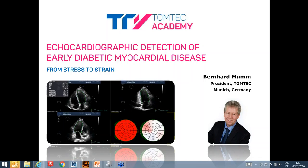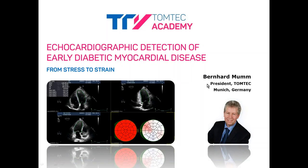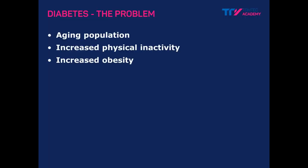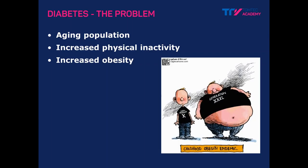Looking at the problem of diabetes — we have a worldwide aging population, which is positive, but it comes with problems. On top of that, we have an increase of physical inactivity, which along with lifestyle changes leads to an increase of obesity. This cartoon illustrates that obesity already starts with children, and childhood obesity is increasing all the time. All these facts together drive the increase of diabetes.